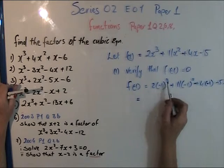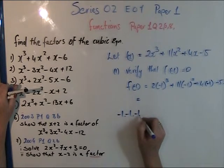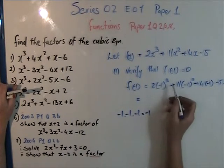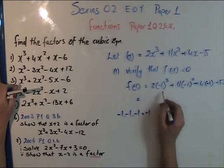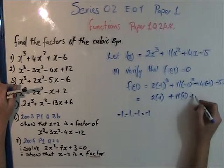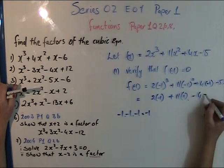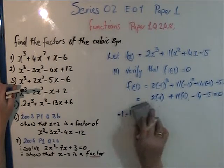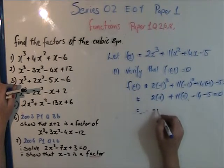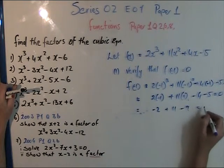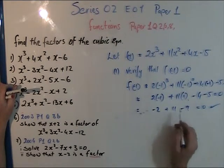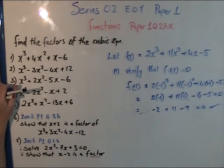Be very careful: (-1)³ = -1, because minus by minus is plus, but then by minus again is minus — an uneven number of negatives gives a minus. So: 2×(-1) + 11×(-1)² + 4×(-1) - 5 = -2 + 11 - 4 - 5. That gives -2 + 11 - 9 = 0. Yes, it equals zero — verified.